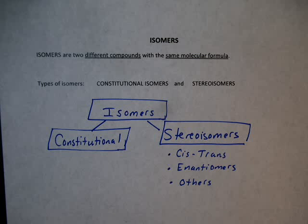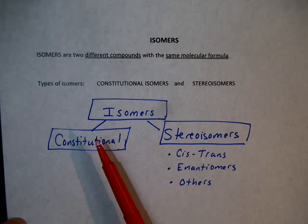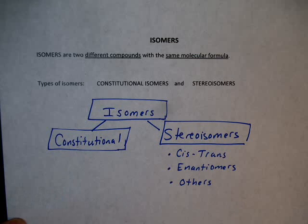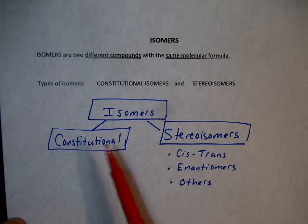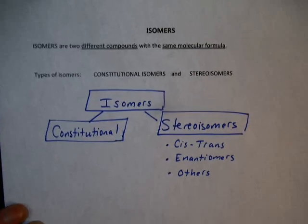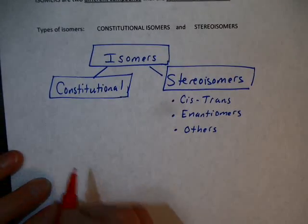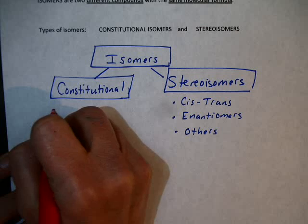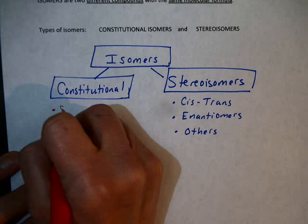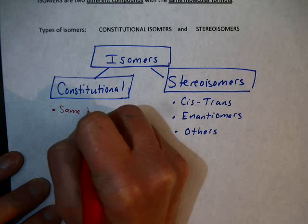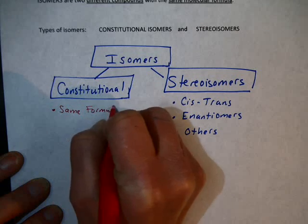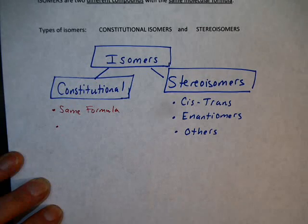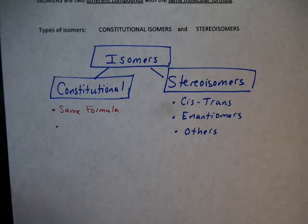We saw in the video just before this one that there are two types of isomers: constitutional and stereoisomers. This video will be looking at constitutional isomers. A constitutional isomer is two compounds that have the same molecular formula, but the order of bonding is different — the order that atoms are connected to each other is different.